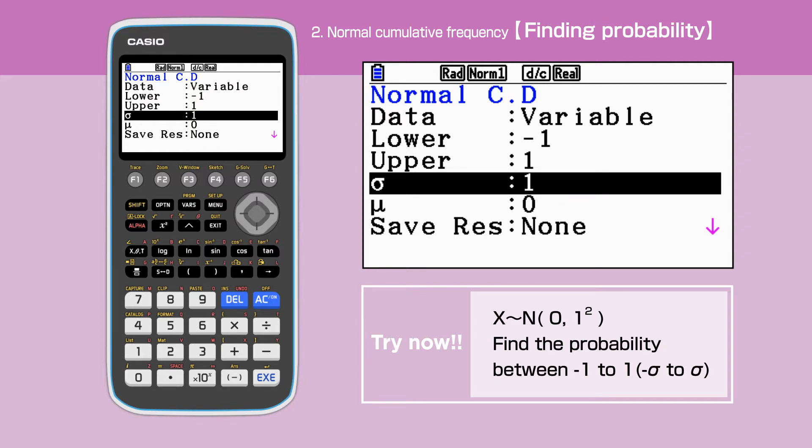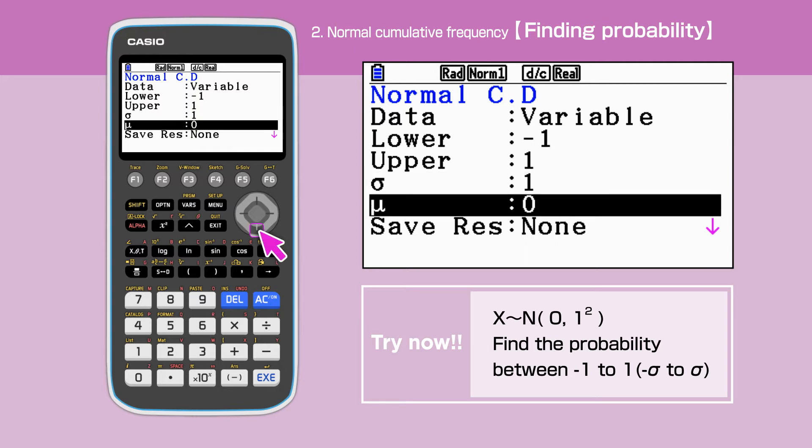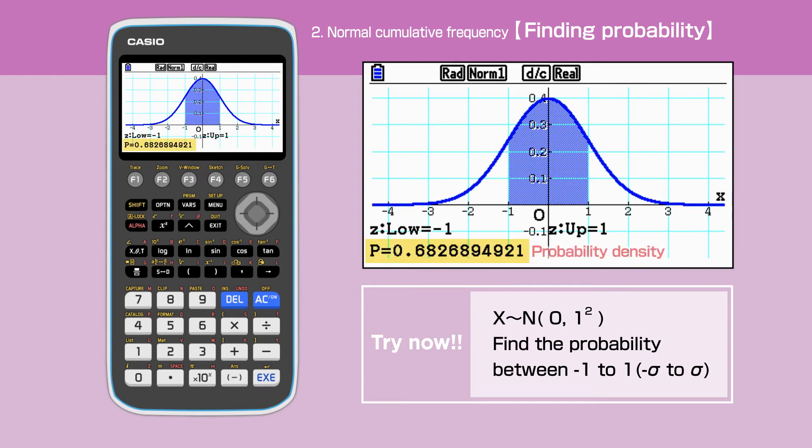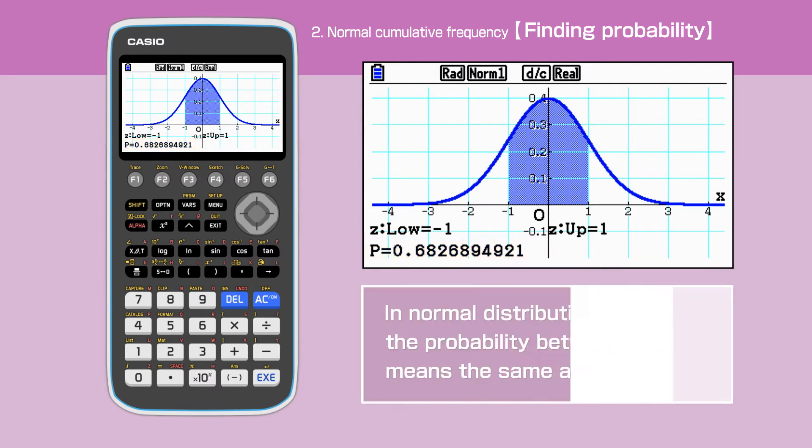We are going to draw the graph and calculate the probability. Scroll down the screen. Highlight the Execute and press F6 to draw the graph. The probability for the question is 0.683. This value also represents the probability between minus 1 and 1 standard deviation.